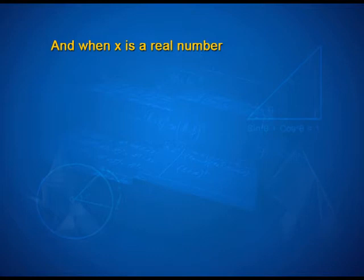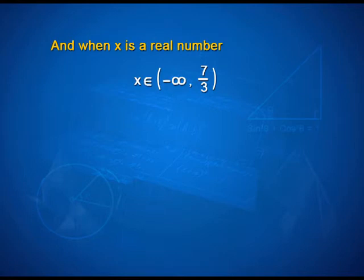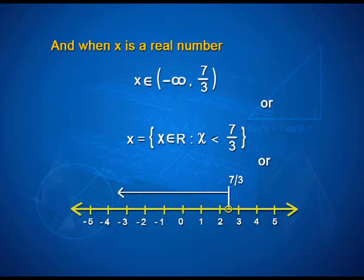If we solve x when x is a real number, the answer expressed in terms of an interval is x belongs to the open interval minus infinity to 7 by 3, open on both ends. Note that at 7 by 3 the interval is open. In set form, x belongs to R such that x is less than 7 by 3. On the number line, it is shown as a hollow circle at 7 by 3 with the arrowhead pointing towards the left.